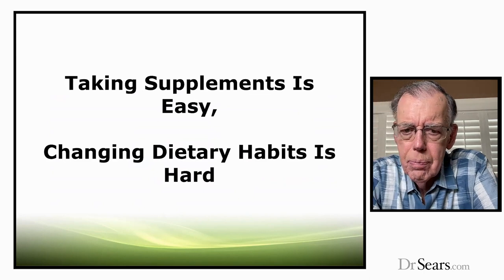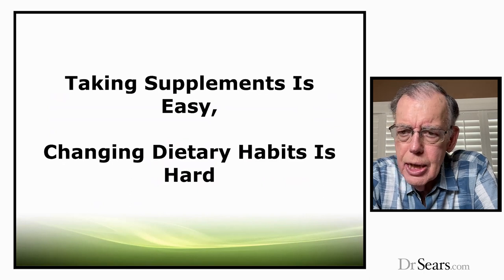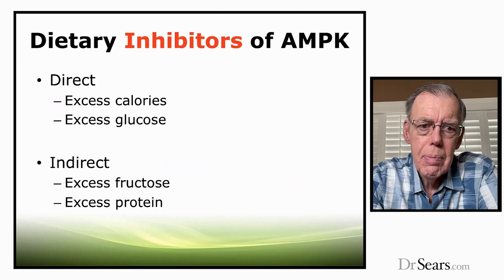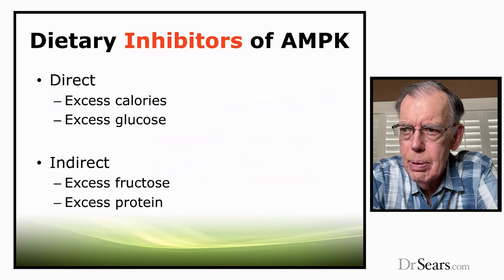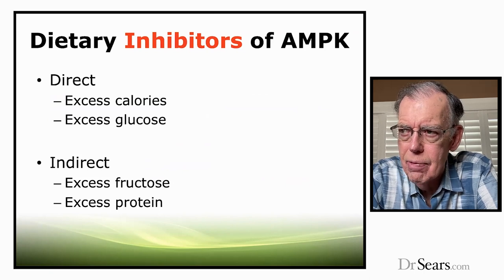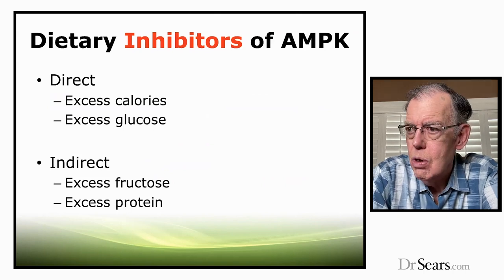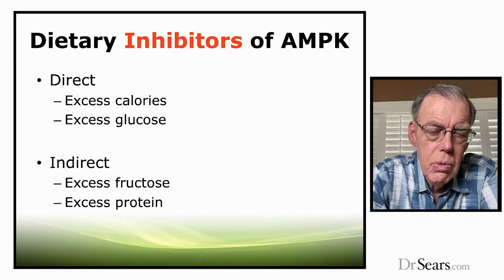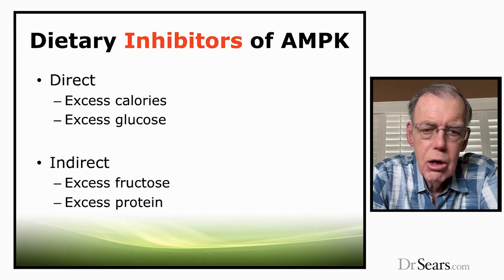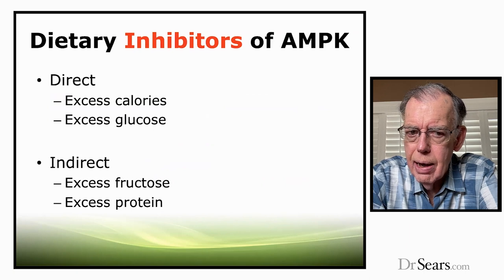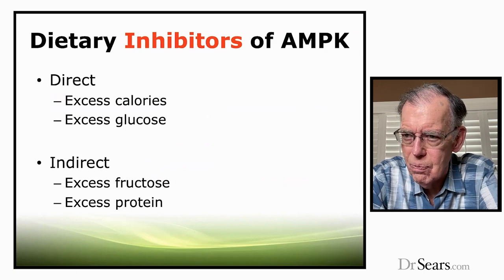Taking supplements is easy, but changing dietary habits is incredibly hard. There are many dietary inhibitors of AMPK. While polyphenols and omega-3 fatty acids increase AMPK activity, many things in your diet decrease its activity: consuming excess calories, consuming excess glucose, and indirect inhibitors — consuming excess fructose or excess protein. For most Americans, they do all four simultaneously. So any benefits of supplementation can be wiped out by your diet.